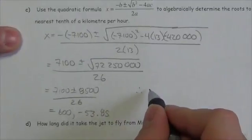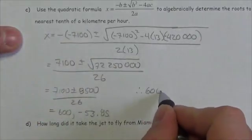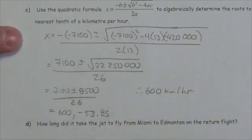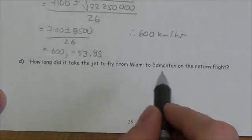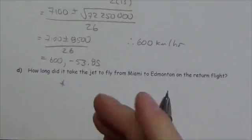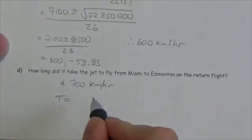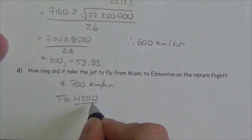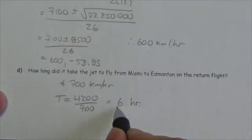Since x equals 600 for the Edmonton-to-Miami leg, the return trip was 100 km/h faster at 700 kilometers per hour. The time for the return flight is 4200 divided by 700, which equals 6 hours.